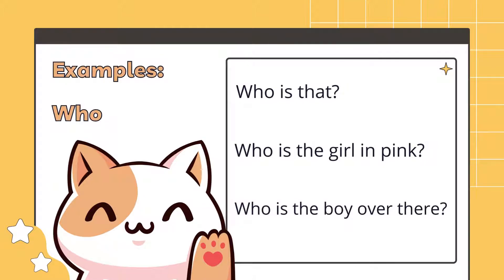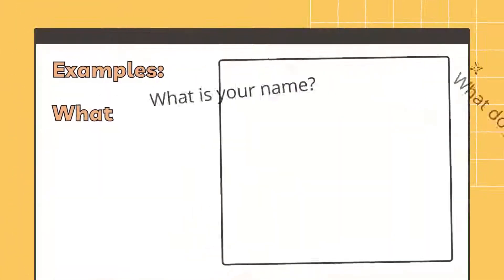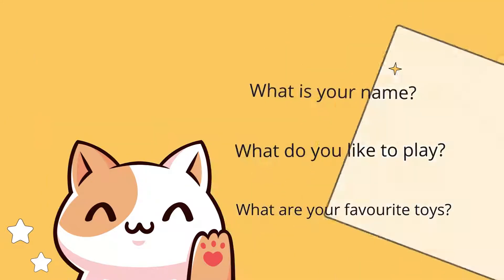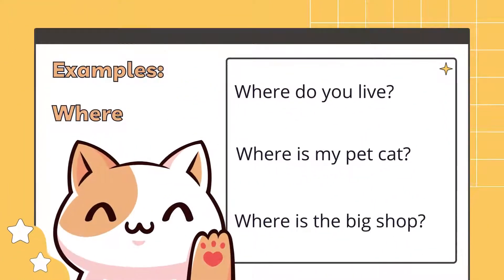Okay, so today let's try with these three first, which is who, what, where. Start with who: who is that? Who is the girl in pink? Who is the boy over there? What is your name? What do you like to play? What are your favorite toys? Where do you live? Where is my pet cat? Where is the big shop?